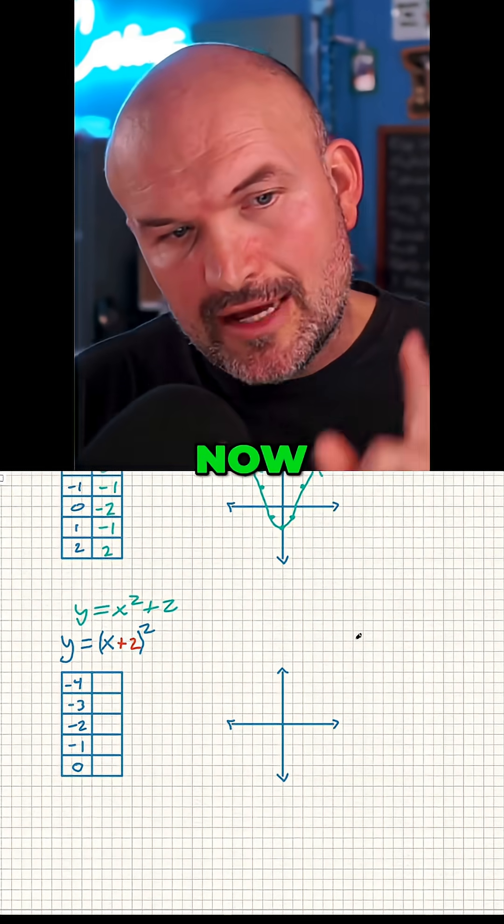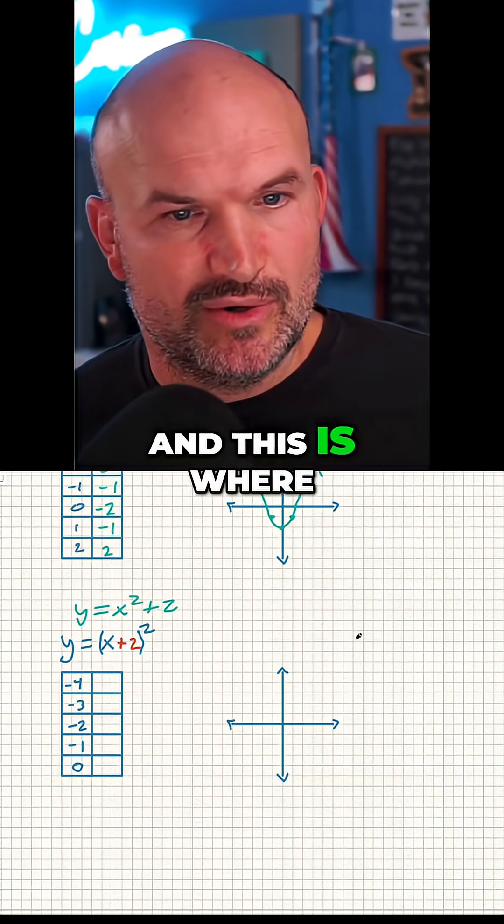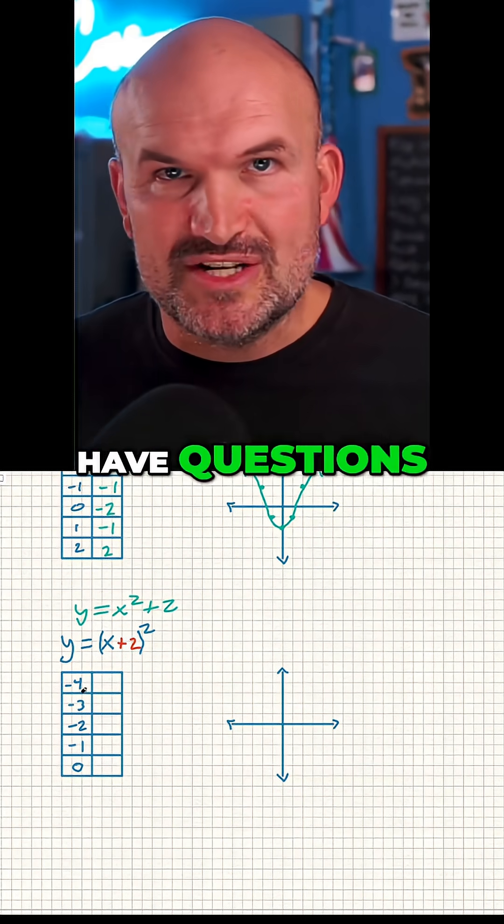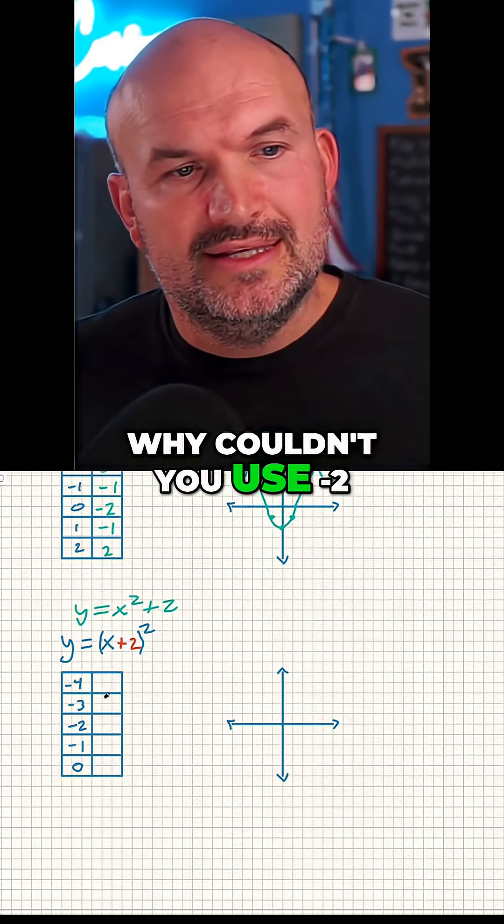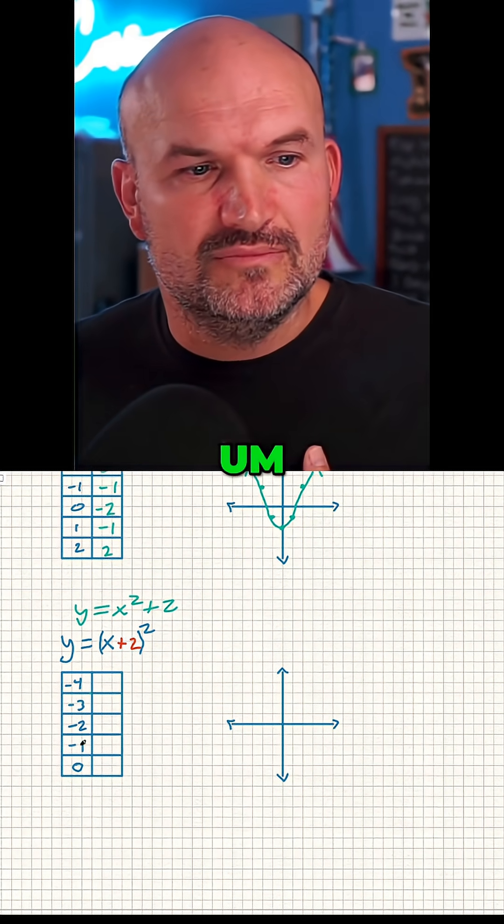That is going to be the value of my vertex. Now, the reason why I changed my table is where a lot of students have questions. They get confused about why you're changing the table. Why couldn't you use negative two, negative one, one, and zero?